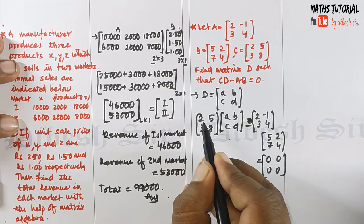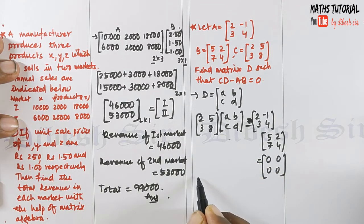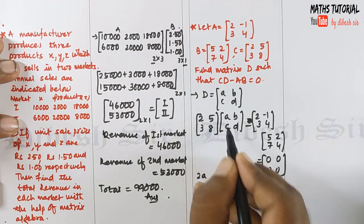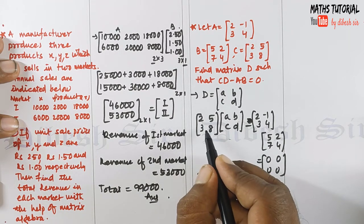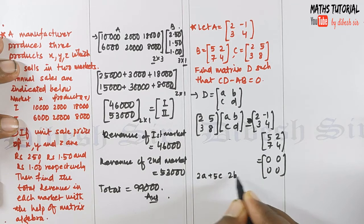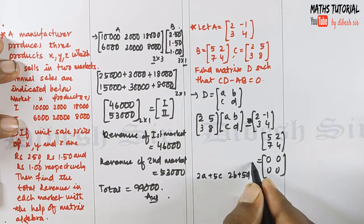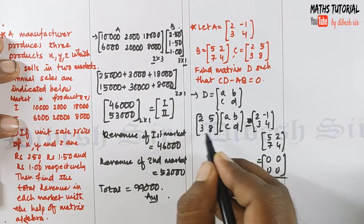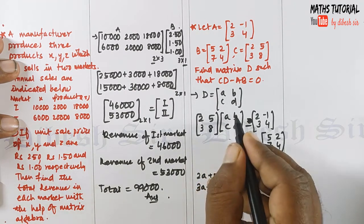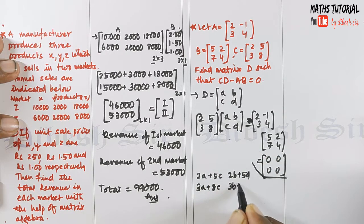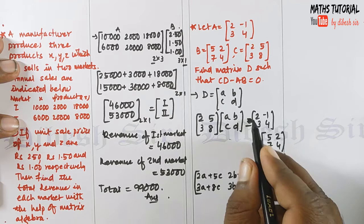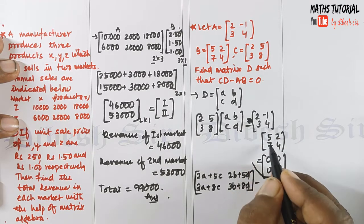Multiplying C times D: the (1,1) entry is 2A + 5C, the (1,2) entry is 2B + 5D, the (2,1) entry is 3A + 8C, and the (2,2) entry is 3B + 8D. Computing AB: (1,1) gives 2×5 + 2×(-7) = 10 - 7 = 3, (1,2) gives 2×2 + 2×4 - 4 = 0, (2,1) gives 3×5 + 4×7 = 15 + 28 = 43.